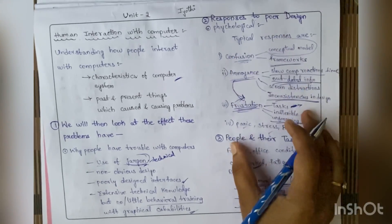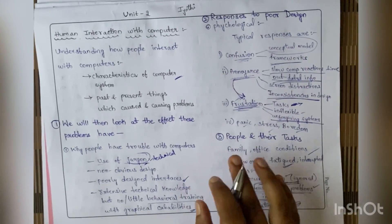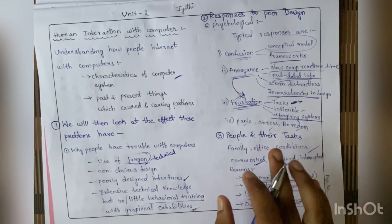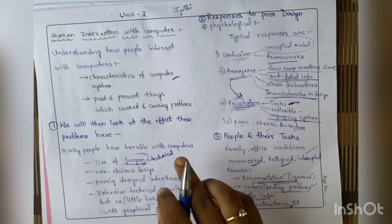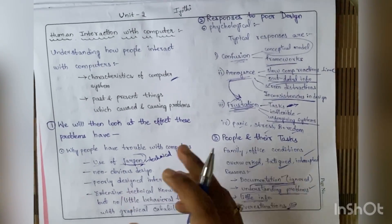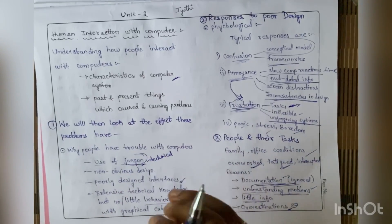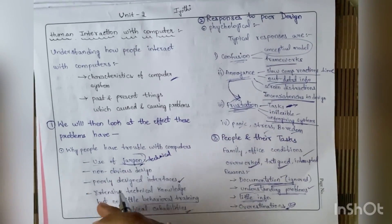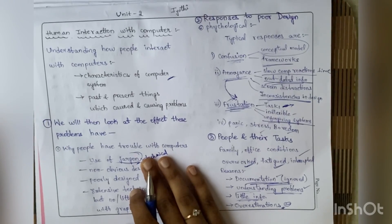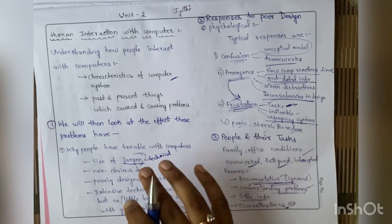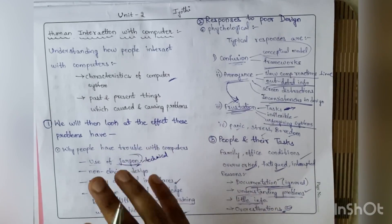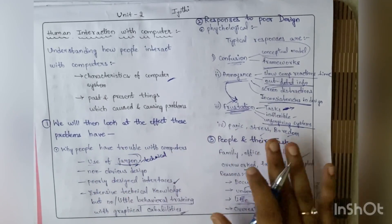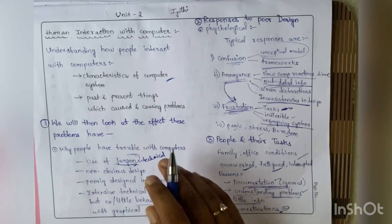The third topic is people and their tasks - how people are behaving and working. Whenever we consider an employee, he may have several situations and conditions regarding his family or office. Because of those things, sometimes he may be very disturbed and distracted - he may not be okay to work properly and may not complete all his work in time.